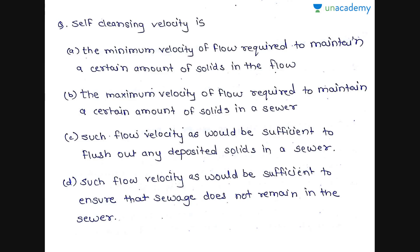The next question is: self-cleansing velocity is — option A is the minimum velocity of flow required to maintain a certain amount of solids in the flow; option B is the maximum velocity of flow required to maintain a certain amount of solids in a sewer; option C is such flow velocity as would be sufficient to flush out any deposited solids in a sewer; option D is such flow velocity as would be sufficient to ensure that sewage does not remain in the sewer.